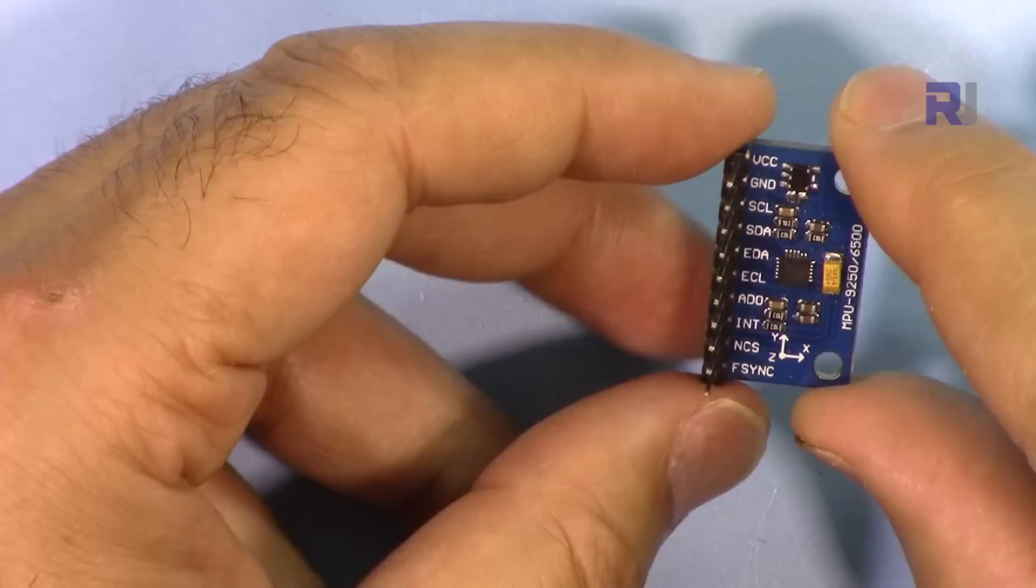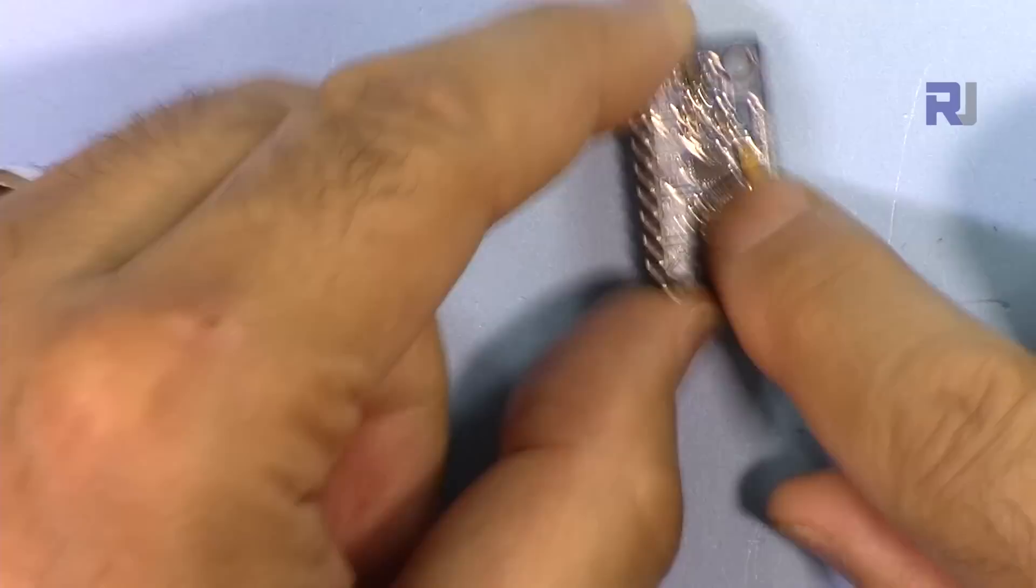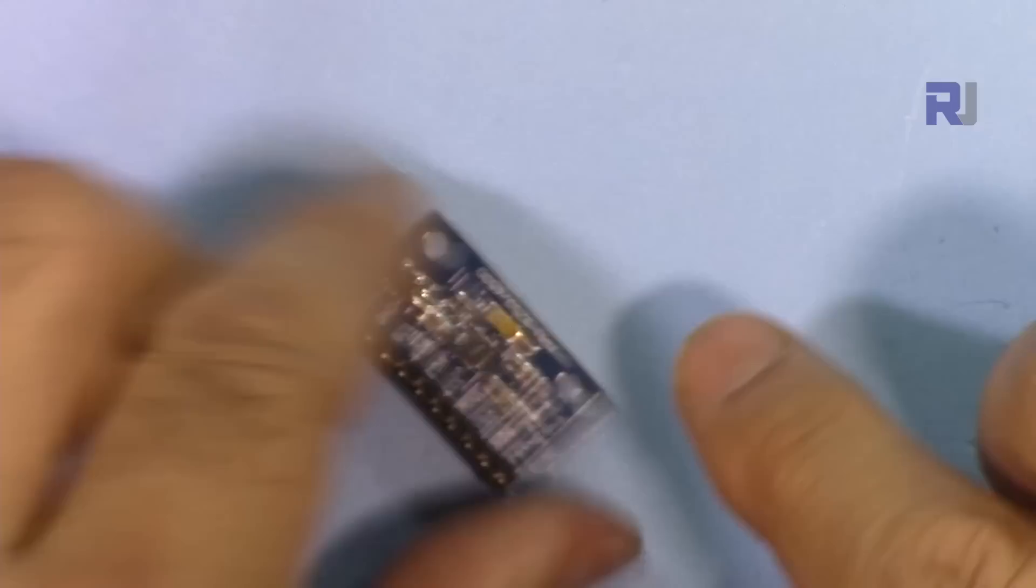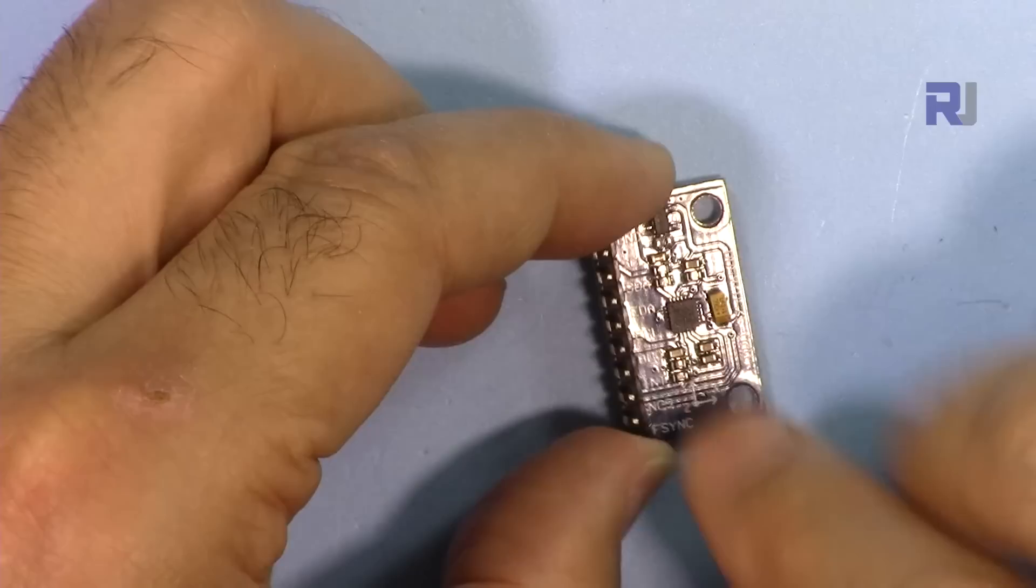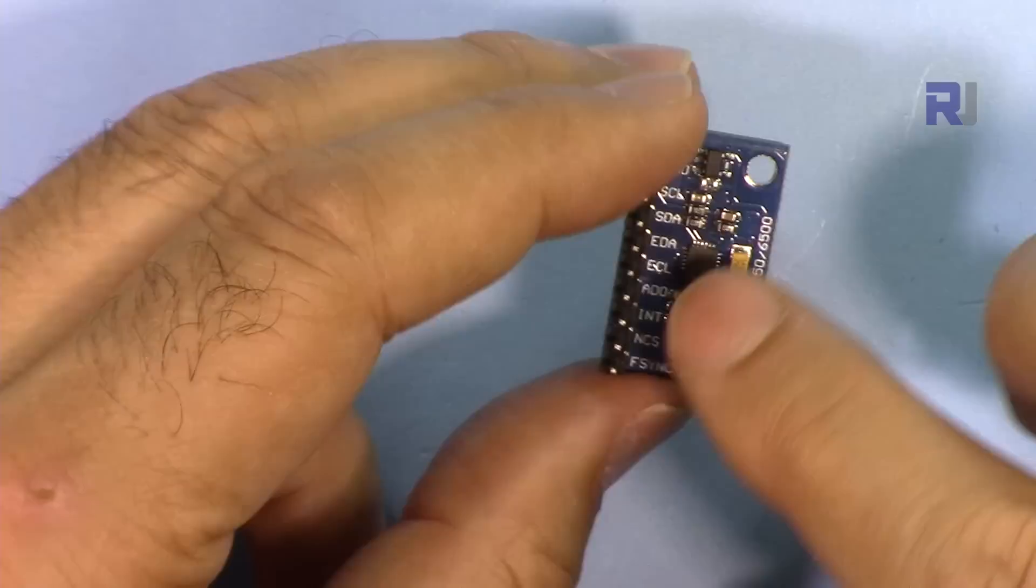On top of accelerometer and gyroscope we have a magnetometer here, so that makes it very attractive for drone applications and for other devices that need to have independent reference with the magnetic field of Earth. This is very useful because the accelerometer and gyroscope has a reference point, so when it starts from a certain point it knows how much it has moved left, right, or down.